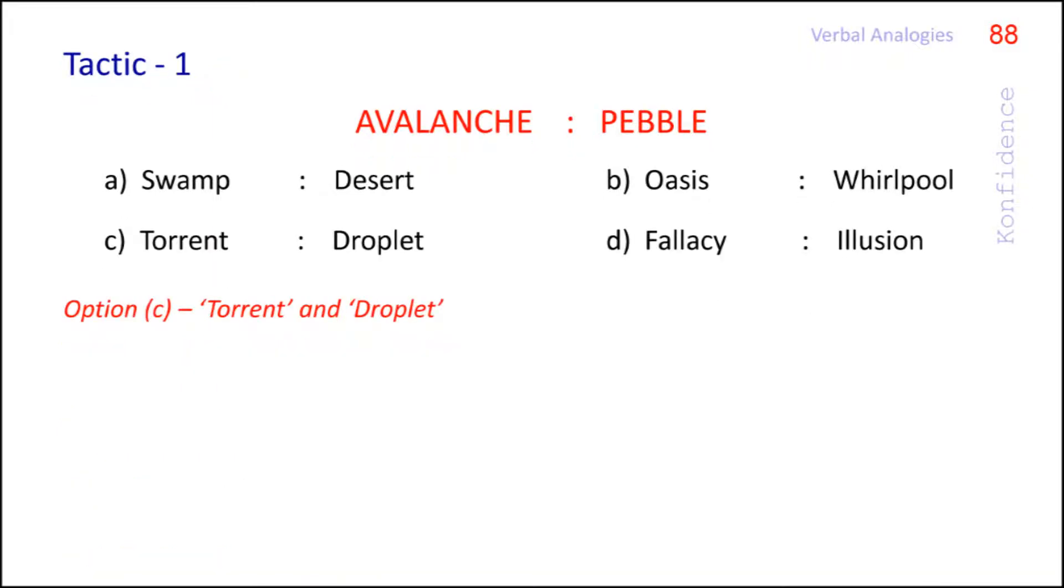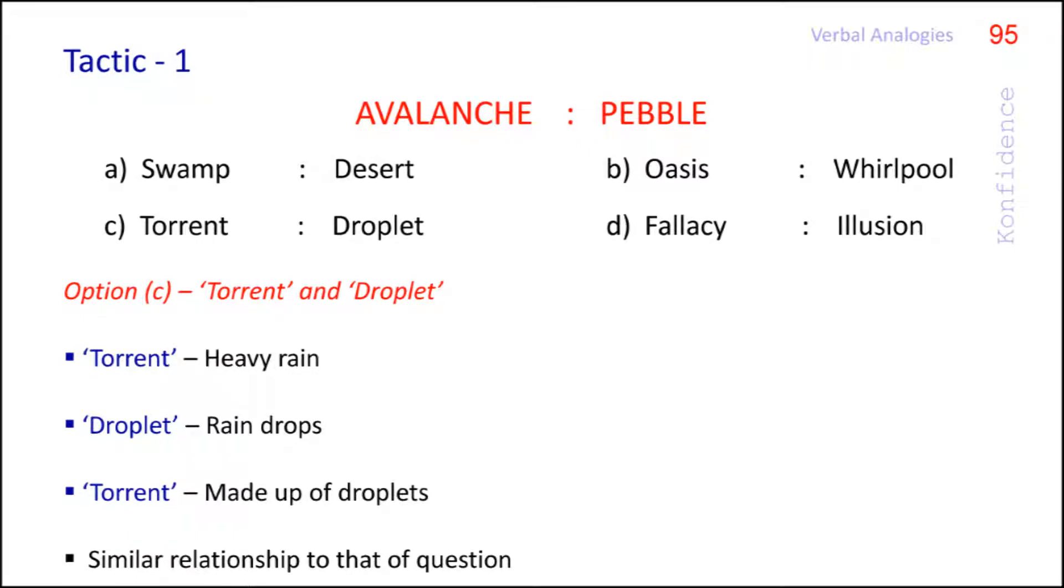Option C, torrent and droplet. Torrent means heavy rain. Droplet means raindrops. That means torrent is made up of droplets. So it has the same kind of relationship of the question pair.